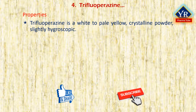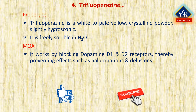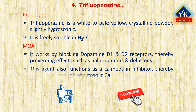Trifluoperazine is a white to pale yellow crystalline powder that is slightly hygroscopic, freely soluble in water, and should be kept in well-closed light-resistant containers. It has central anti-dopaminergic, anti-adrenergic, and minimal anticholinergic effects. It is believed to work by blocking dopamine D1 and D2 receptors in the mesocortical and mesolimbic pathways, relieving symptoms of schizophrenia such as hallucinations, delusions, and disorganized thought and speech. It also functions as a calmodulin inhibitor, thereby leading to elevation of cytosolic calcium.